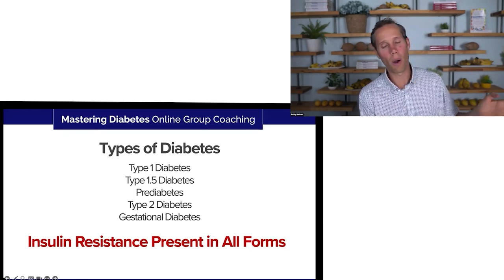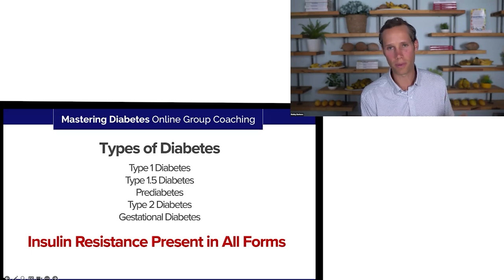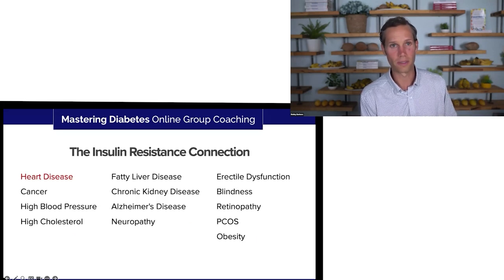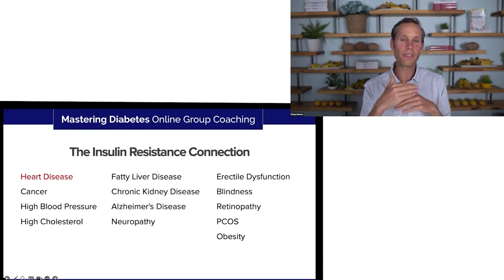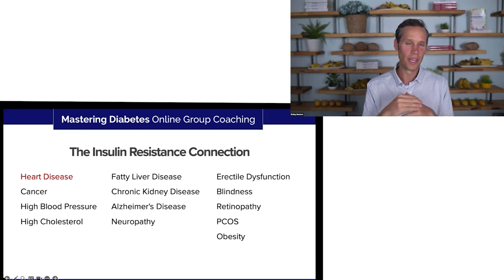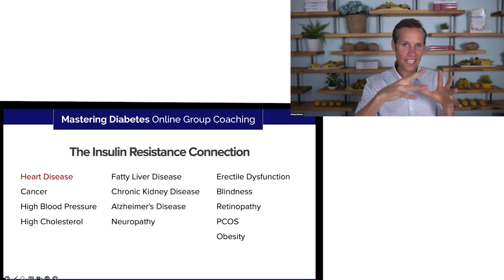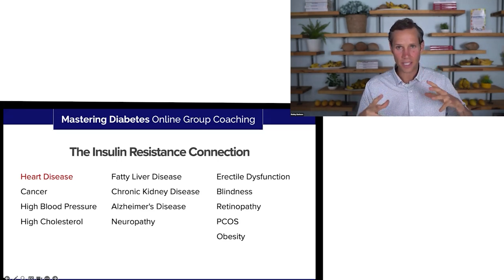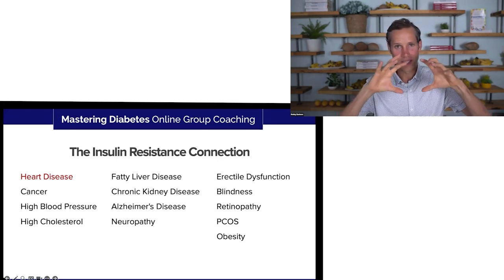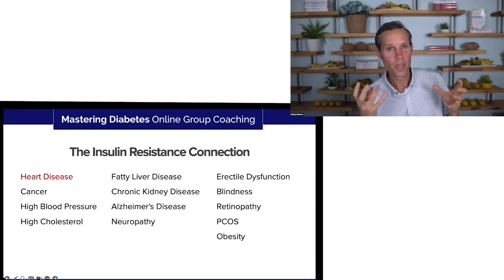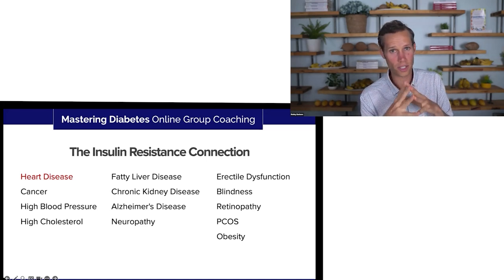Upwards of 45% of the population is insulin resistant. Insulin resistance can be thought of as a central node to a laundry list of chronic diseases.